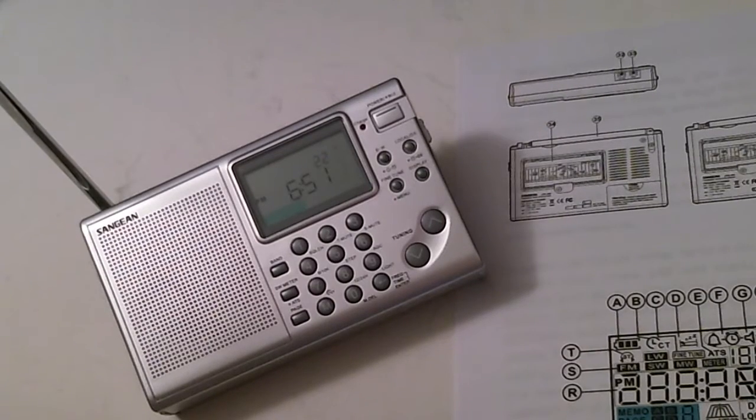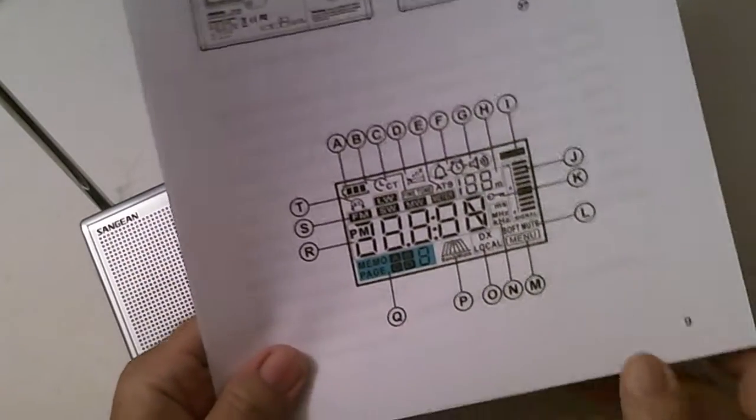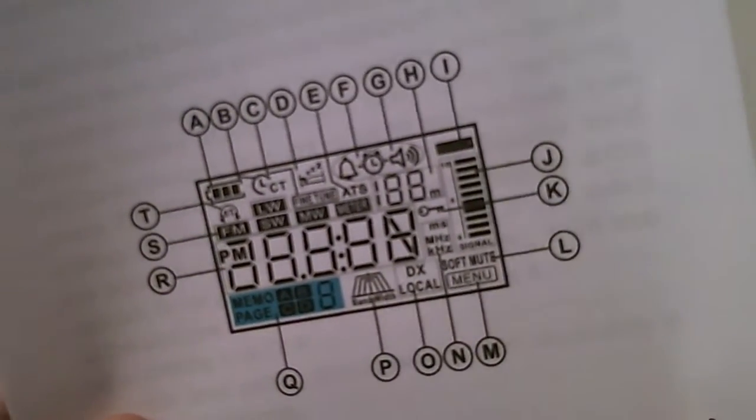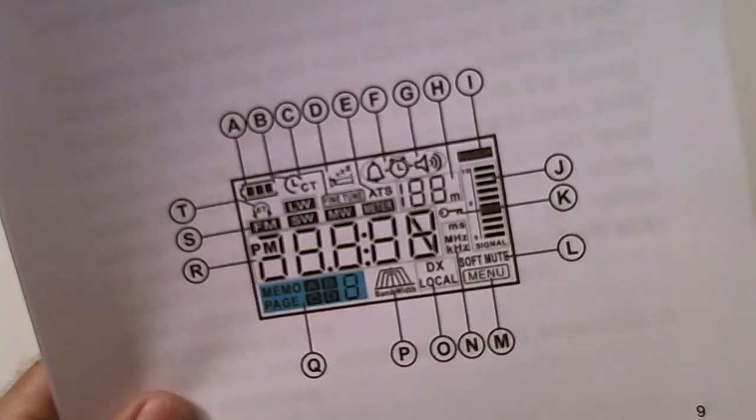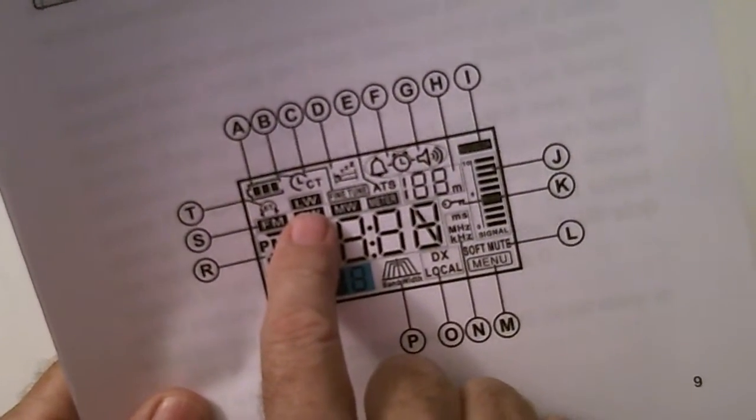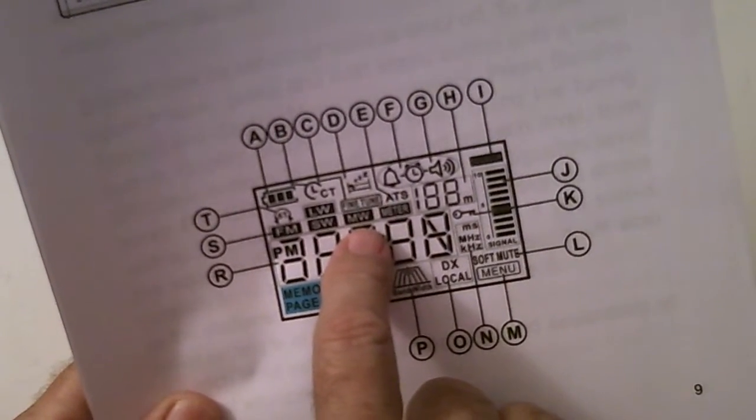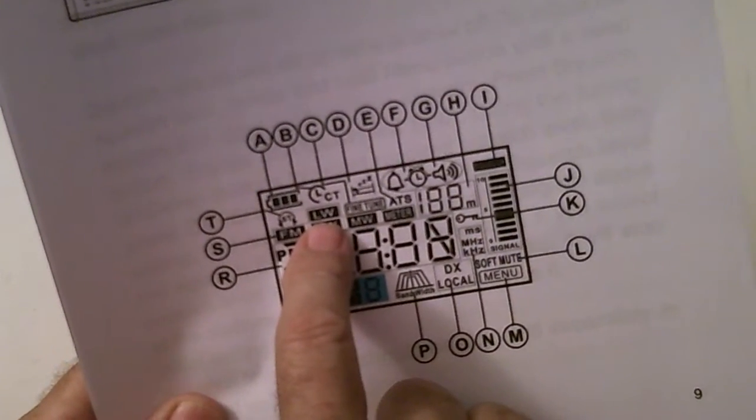Now, along those lines, somebody said, well, that's too bad it doesn't have longwave. Well, let me show you something here in the manual. This is the display and all the things that could be displayed. And right here is LW. There's FM, SW, mediumwave MW, and meter. And right there is longwave.